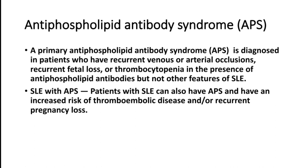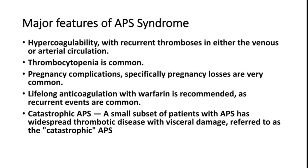Primary antiphospholipid antibody syndrome is diagnosed in patients who have recurrent venous or arterial occlusions, recurrent fetal loss, or thrombocytopenia in the presence of antiphospholipid antibodies, but without other features of SLE. Patients who have SLE and antiphospholipid syndrome — especially pregnant female patients — can experience many complications. Patients with SLE and APS have increased risk of thromboembolic disease and recurrent pregnancy loss.